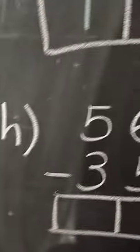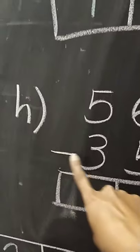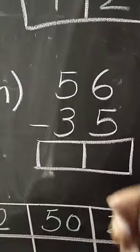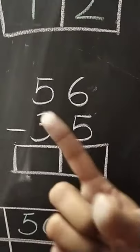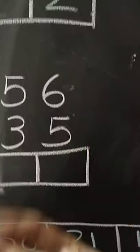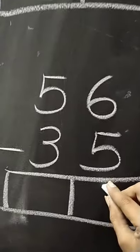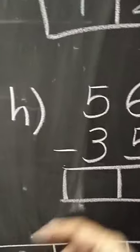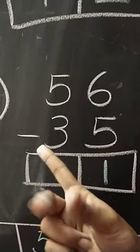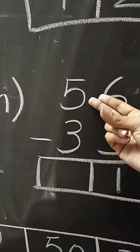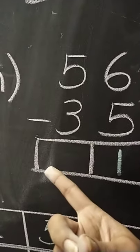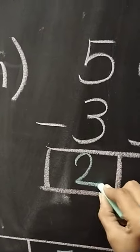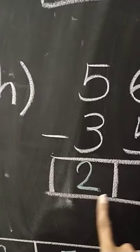Next, here we have 56 minus 35. So, 6 minus 5 — what comes after 5? 6. The difference will be 1. And 5 minus 3 — what comes after 3? 4 and 5. We count till 5. So, the difference is 2. Here our answer will be 21.